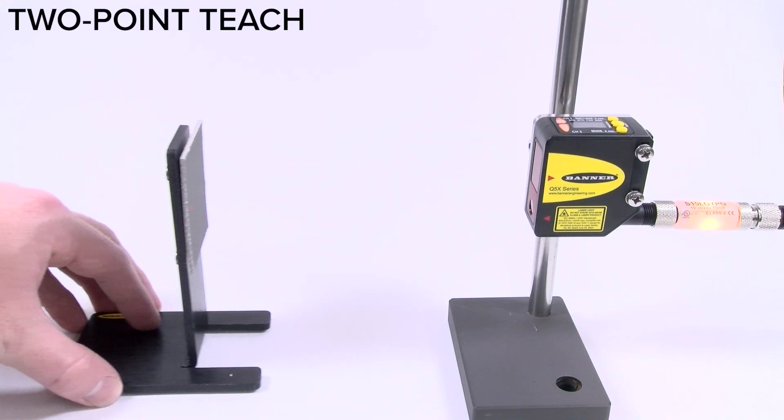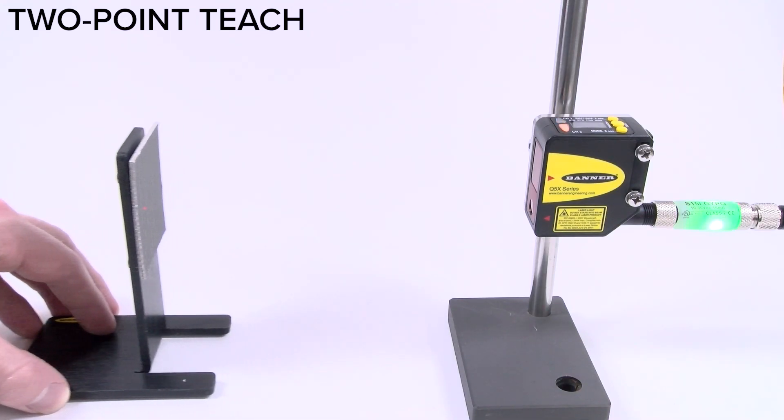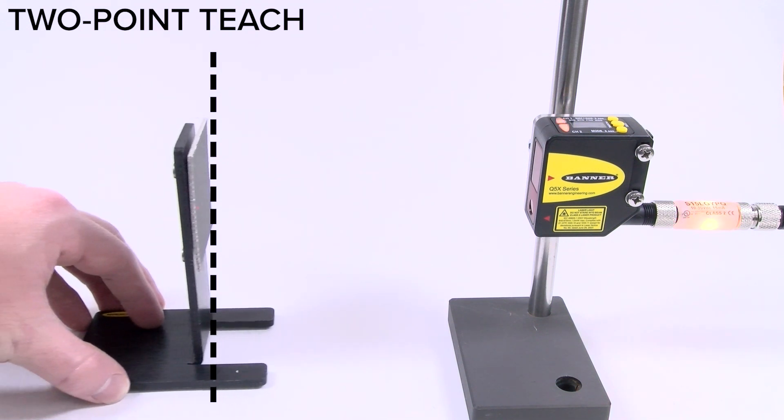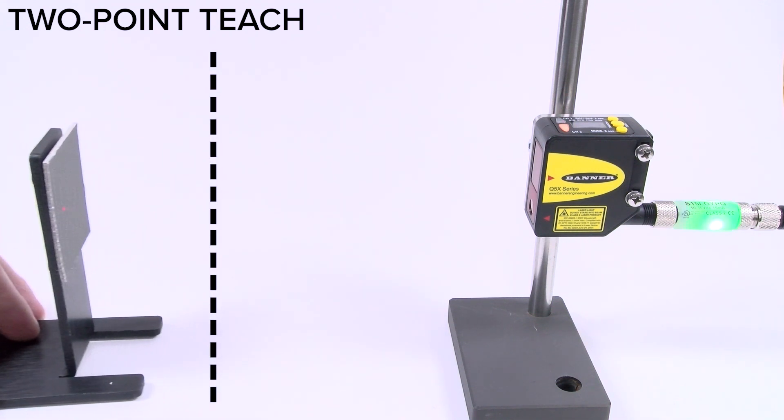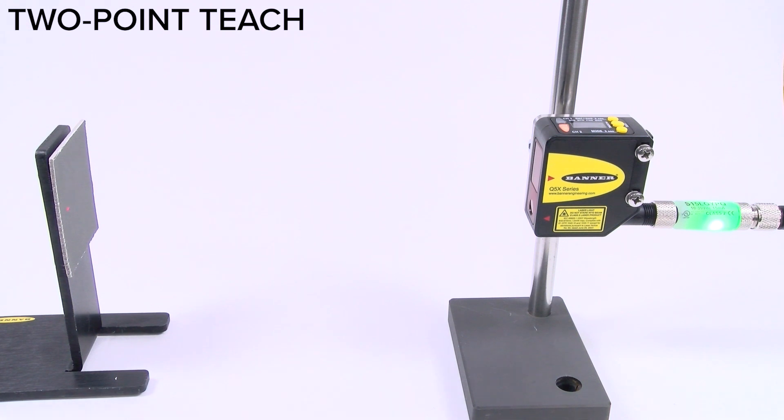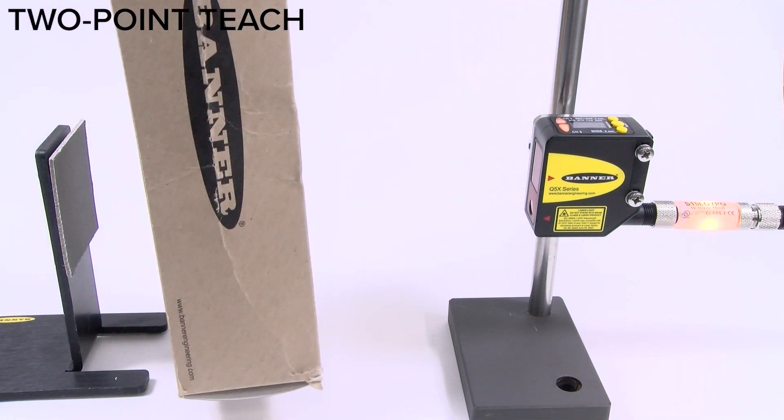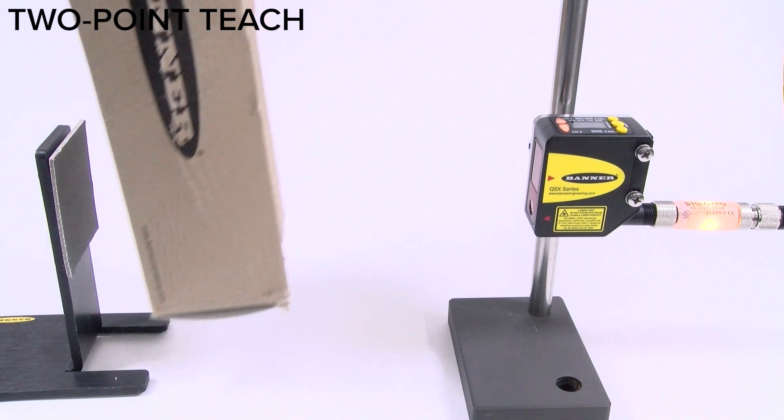The most common teach mode for the Q5X is 2-point teach. This mode will be able to solve most applications and is generally used when there is a background with an object passing in front. After being taught, the sensor will ignore the background and detect the object.